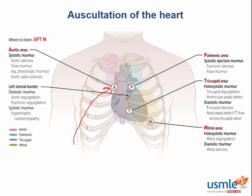In the second intercostal space along the right parasternal border is the aortic area, where you can best appreciate the aortic valve and its associated murmurs. Across the sternum is the pulmonic area, the second intercostal space along the left parasternal border, where you can best appreciate the pulmonic valve. Moving down three intercostal spaces, you get to the tricuspid area along the left parasternal border in the fifth intercostal space. Moving laterally to the midclavicular line in the fifth intercostal space is the mitral area.